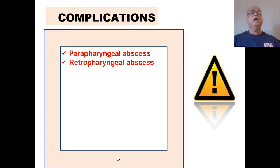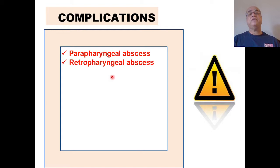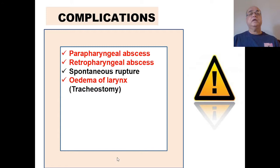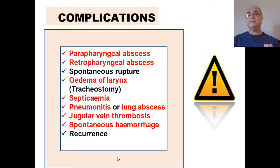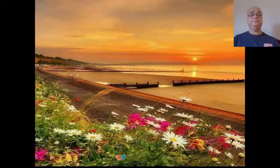Complications: the infection can spread from the peritonsillar space to other head and neck spaces, especially the parapharyngeal space and retropharyngeal space, leading to parapharyngeal or retropharyngeal abscesses. There can be spontaneous rupture leading to aspiration or laryngeal edema, jeopardizing the airway and potentially requiring tracheostomy. If uncontrolled, complications include septicemia, pneumonitis, lung abscesses, jugular vein thrombosis, spontaneous hemorrhage due to the highly vascular inflammatory process, and recurrence of peritonsillar abscess.